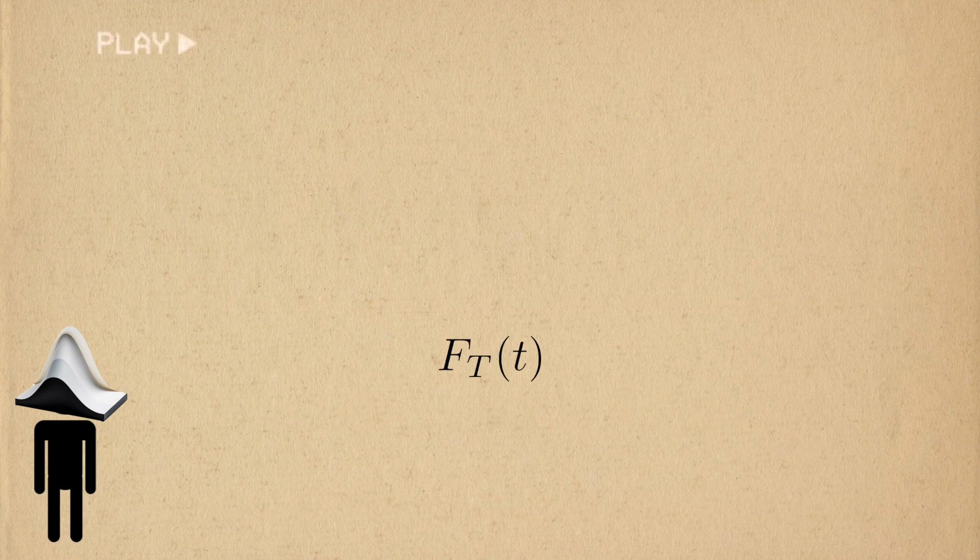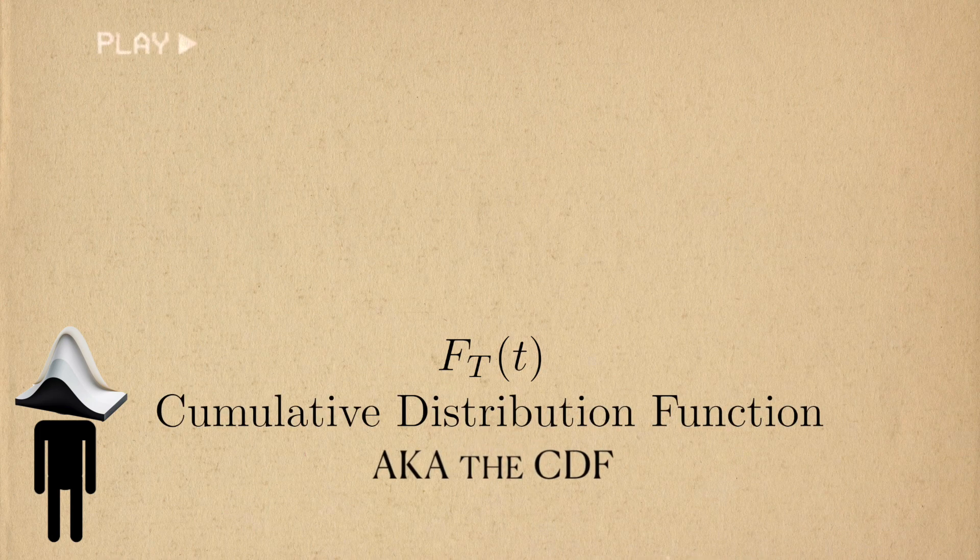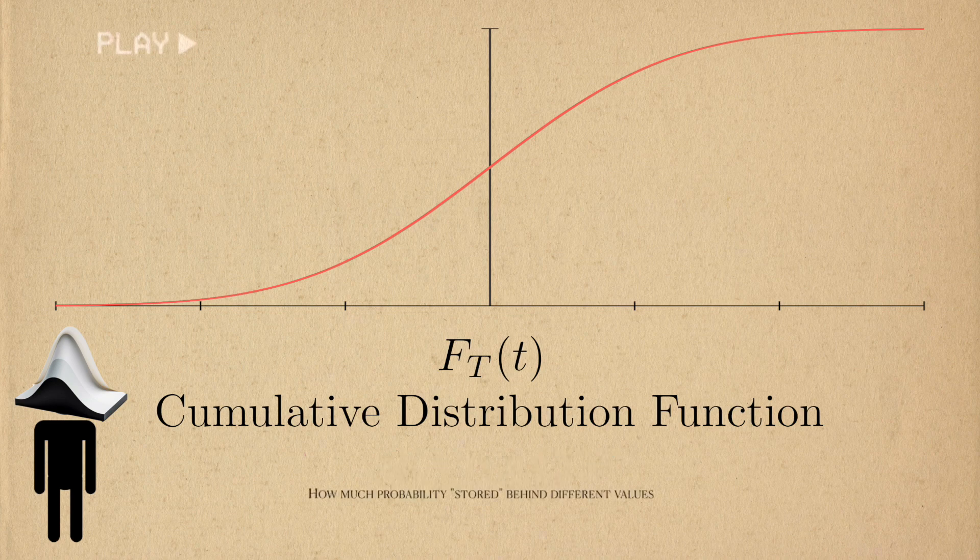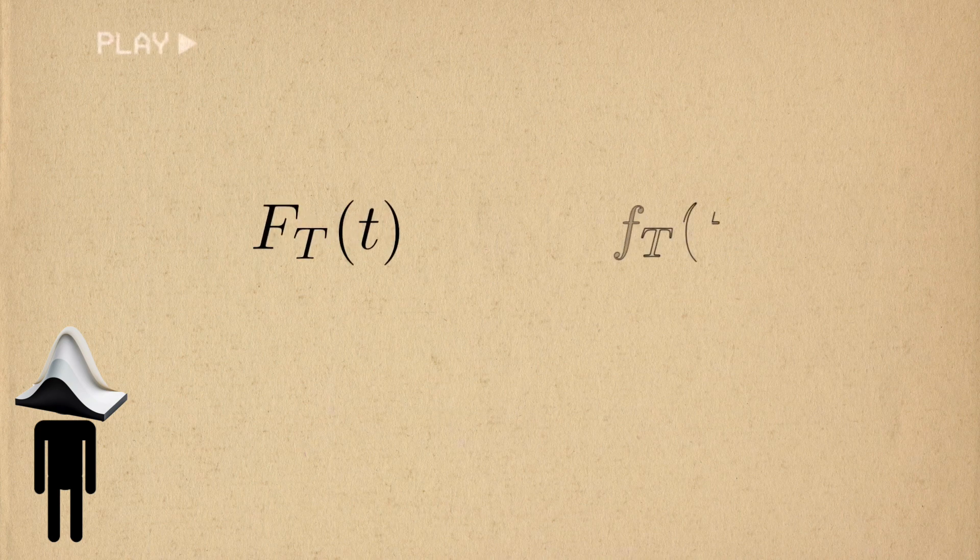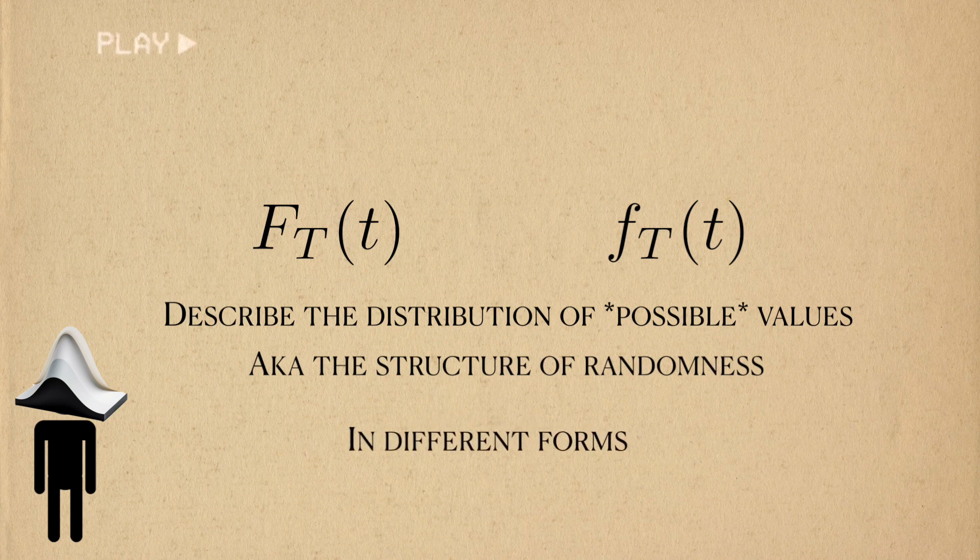The PDF describes the likelihood that a random variable will take a particular value. Similarly, you can describe a random variable using the cumulative distribution function, or CDF. The CDF describes how much probability is stored behind a given value of a random variable. The CDF and PDF both convey the distribution of the randomness in a random variable, but in different forms.